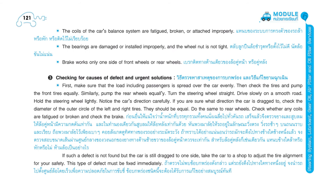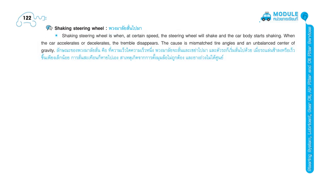Page 121-122. This type of defect must be fixed immediately. Shaking steering wheel: at a certain speed the steering wheel will shake and the car body starts shaking. When the car accelerates or decelerates, the tremble disappears. The cause is mismatched tire angles and an unbalanced center of gravity.